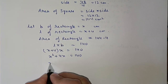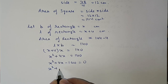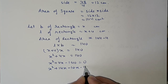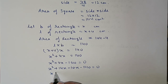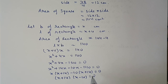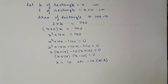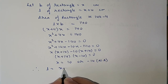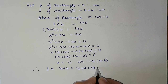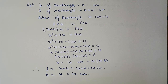Shifting 140 to the other side: x² + 4x − 140 = 0. Factorizing: factors of 140 are 14 and 10, so (x + 14)(x − 10) = 0. The two values of x are either 10 or −14. We discard −14 as it is negative, so x = 10. Therefore, length = x + 4 = 10 + 4 = 14 centimeters and breadth = x = 10 centimeters.